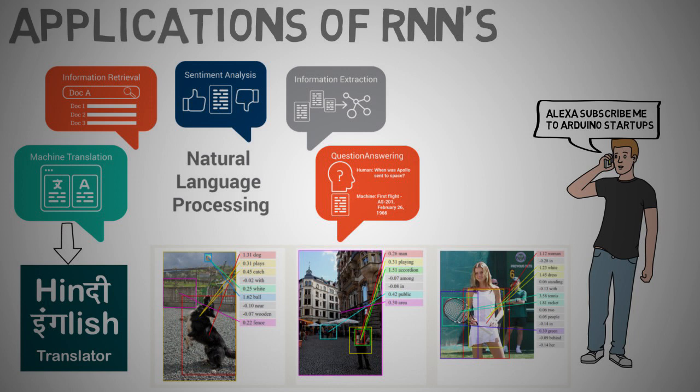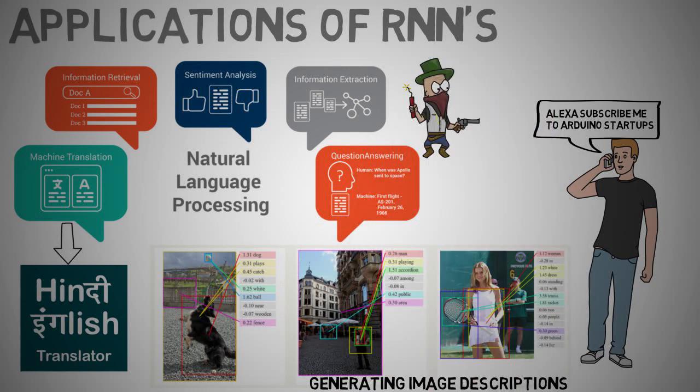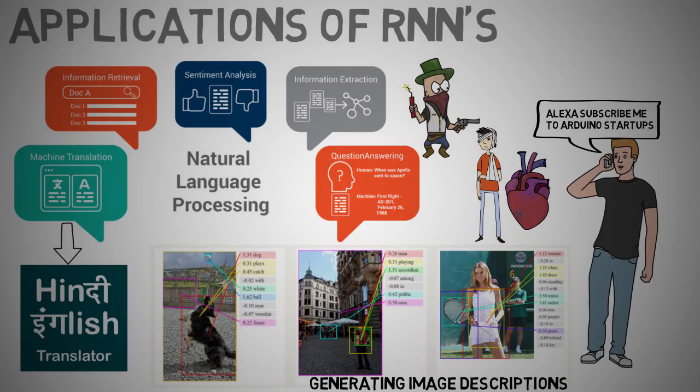Generating image descriptions. Together with convolutional neural networks, RNNs have been used as part of a model to generate descriptions for unlabeled images. We can see from these images, we can detect a dog that is playing catch near a fence, a man playing an accordion, or even a woman playing tennis. Imagine the possibilities of this. One day this technology can be used to identify acts of crime or to save people's lives should they suffer with a particular health condition.